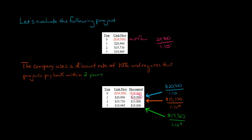So we're going to discount the $20,900, it becomes $19,000. That's after we've taken the $20,900 and divided it by 1.10. And then the $15,730 after being discounted two periods at 10% becomes $13,000. And then the $19,965 after being discounted at 10% for three periods becomes $15,000.